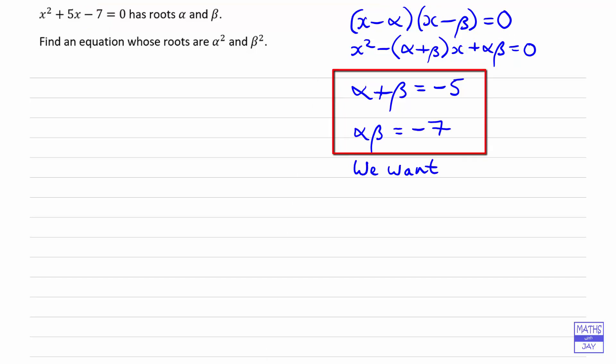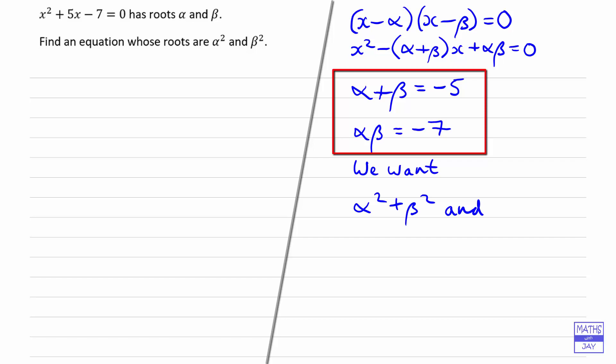So if we want an equation that's got roots alpha squared and beta squared, what we want to find is alpha squared plus beta squared, and the product of alpha squared and beta squared.